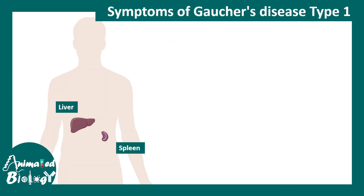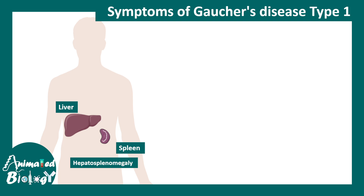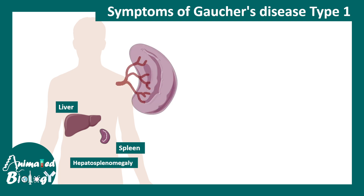Other symptoms of type 1 Gaucher disease include hepatosplenomegaly. Not only is there scarring in the liver, but also in the spleen there are entrapped thrombocytes.